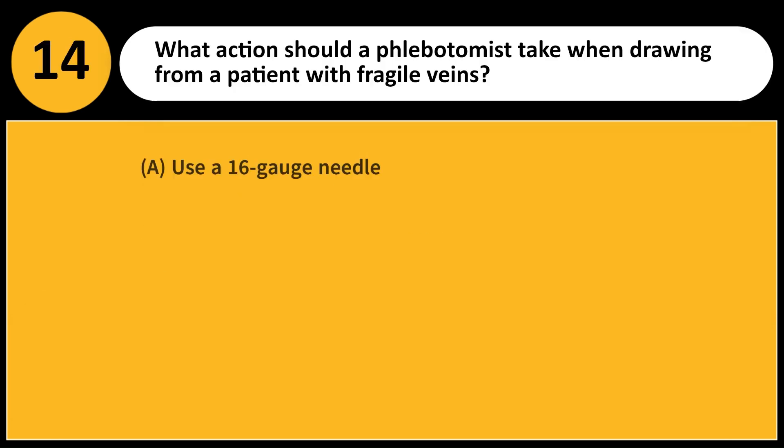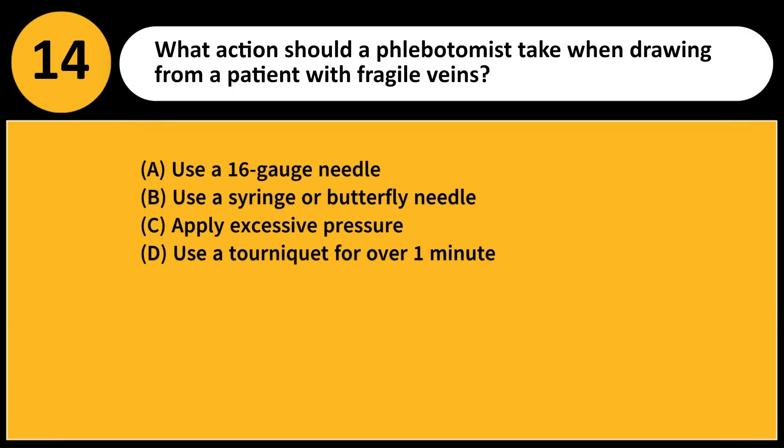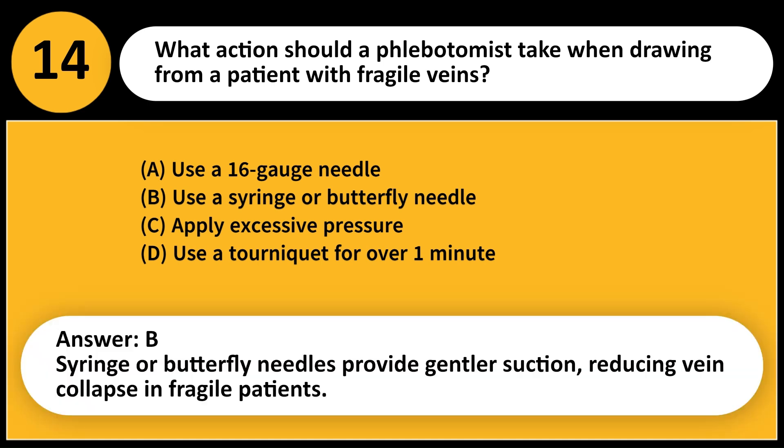What action should a phlebotomist take when drawing from a patient with fragile veins? A. Use a 16-gauge needle. B. Use a syringe or butterfly needle. C. Apply excessive pressure. D. Use a tourniquet for over one minute. Answer: B. Syringe or butterfly needles provide gentler suction, reducing vein collapse in fragile patients.